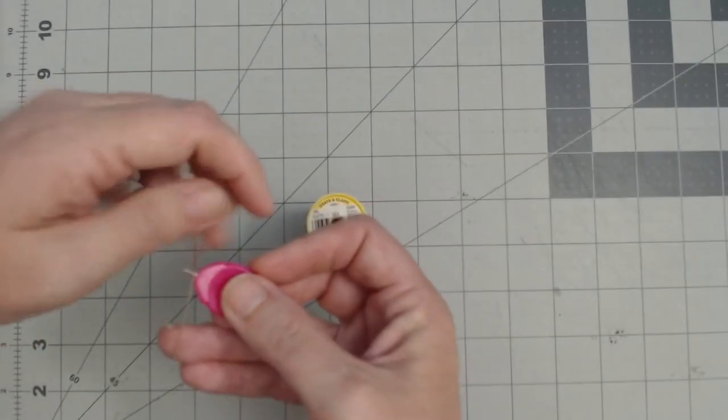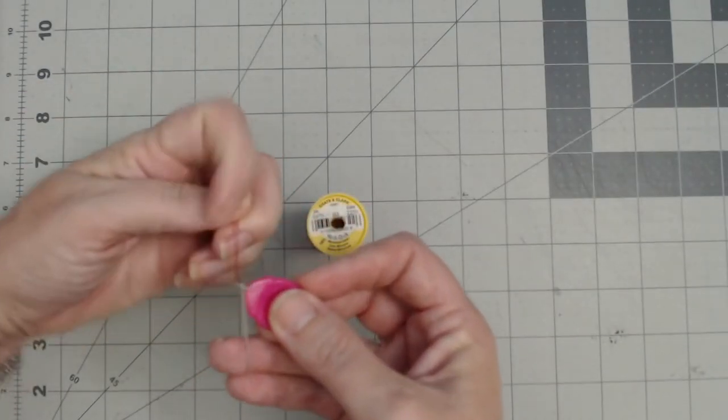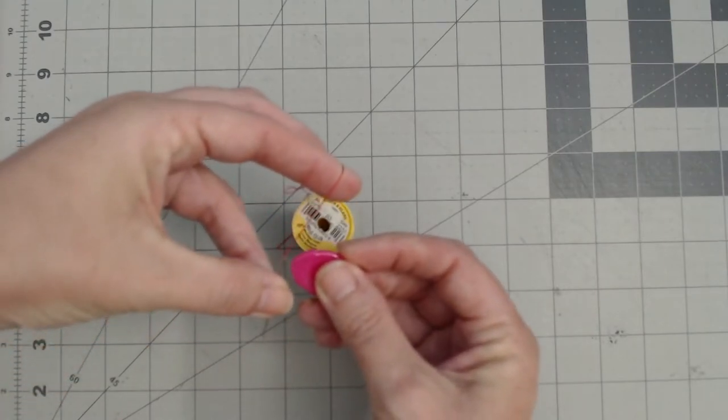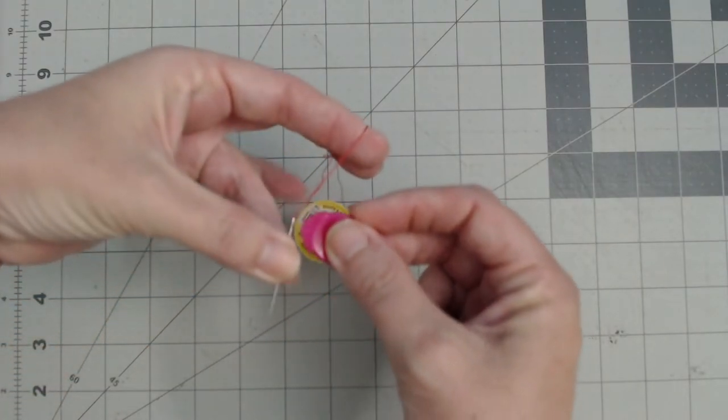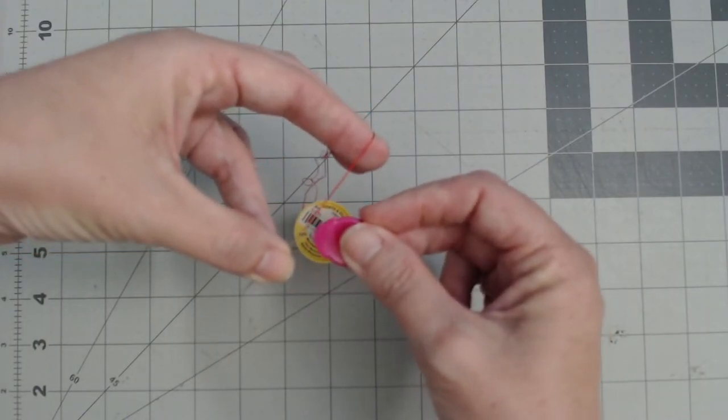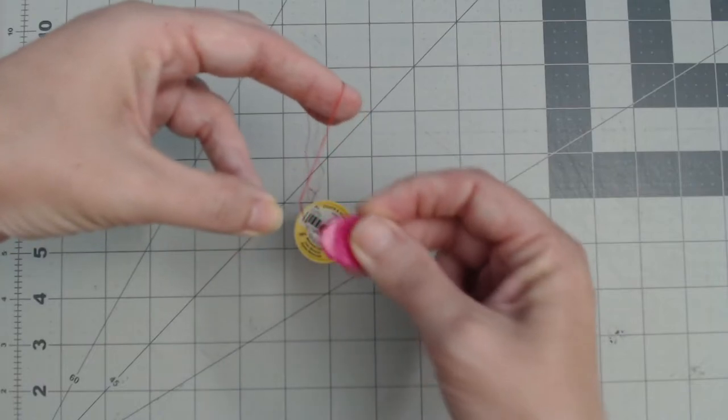And then you almost need three hands for this. I wrap my thread around the little hook and hold it taut. And then with my thumb and ring finger, I'm holding on to the needle, and then I'm just pulling it through.